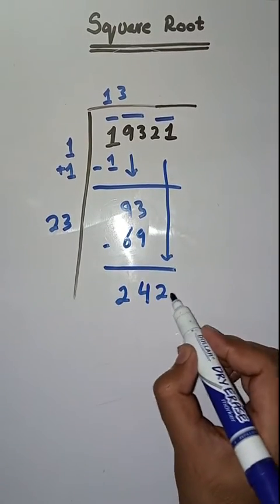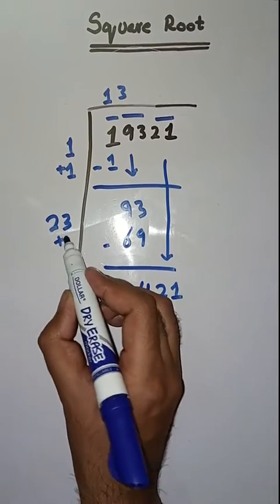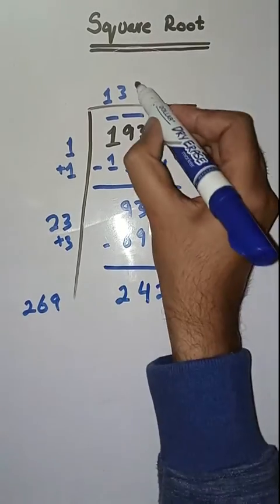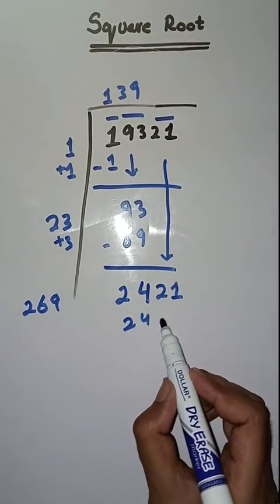Next pair is 21. This is how we have to take a number 3. Here we have to take a number 3, which is equal to 26. Now we will take a number 9. 269 times 9 equals 2421.